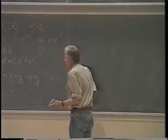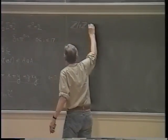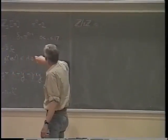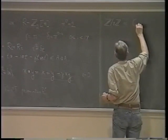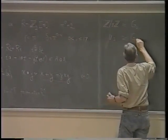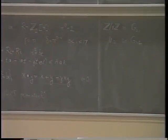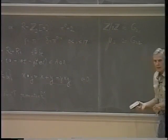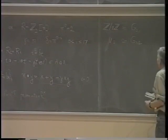We know two group schemes of order two over R. The constant scheme Z/2Z corresponds to δ = 1, so it's G_{2,1}. And μ_2 is G_{1,2}. As Larry Washington said, sometimes μ_2 is the same as Z/2Z, and sometimes it isn't. You can see exactly when it is: if 2 is invertible, they're isomorphic; if 2 is not invertible, they're not.